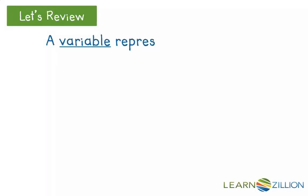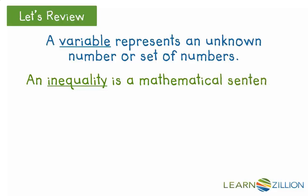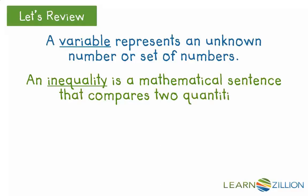Let's review some vocabulary. A variable represents an unknown number or set of numbers. An inequality is a mathematical sentence that compares two quantities. Here we have the inequality 5 is greater than x. This inequality is comparing our unknown set of numbers, or x, to 5. And 5 is greater than x is the same as saying x is less than 5 — these are equal.